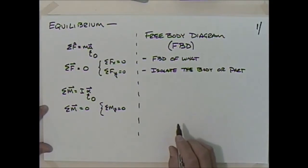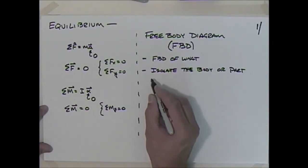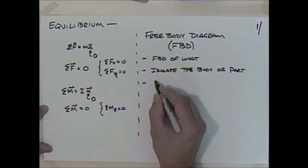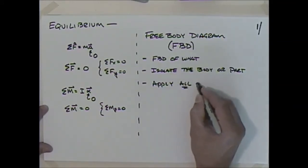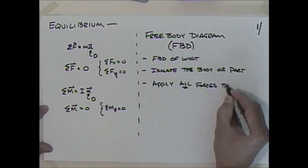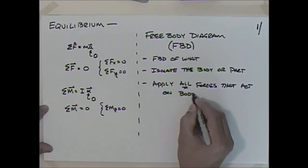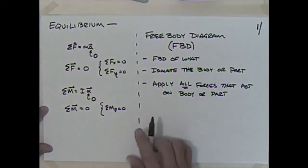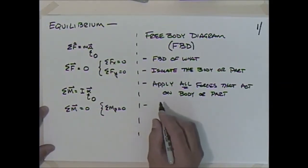Once we've decided what to draw, we isolate that body or part from all other bodies or parts, and replace the interactions and reactions with forces. Then we apply all forces that act on the body, and finally we indicate our coordinate system.